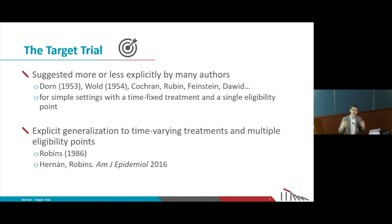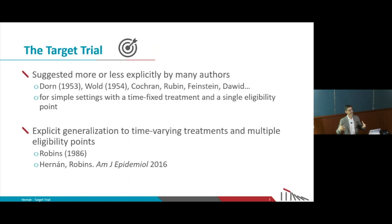Most questions we have in health, medicine, and public health are not like that. Most questions are about strategies — treatment strategies sustained over time. Should I treat now and keep treating for the next five years unless the treatment doesn't work, and then switch? For that type of question, we need to expand the theory so we can think of the appropriate target trial. That is what Jamie Robbins did in the mid-1980s.